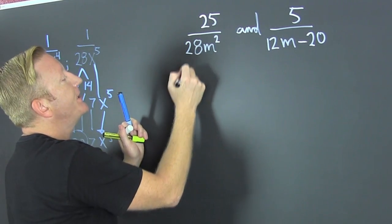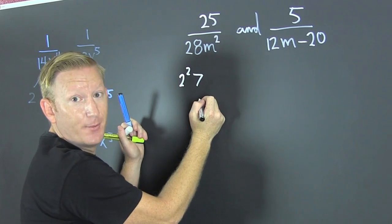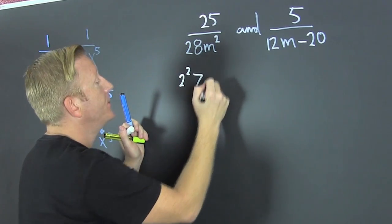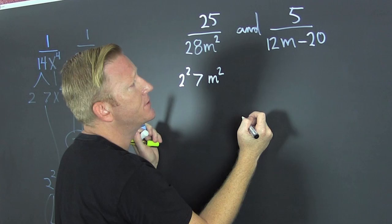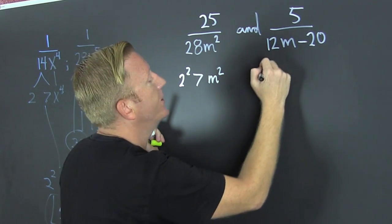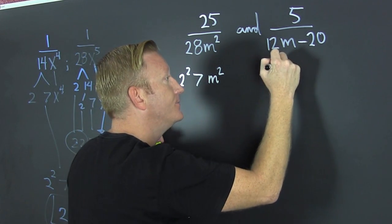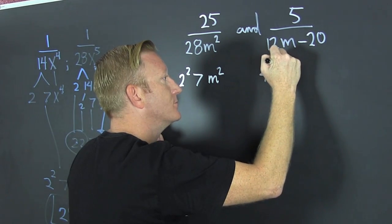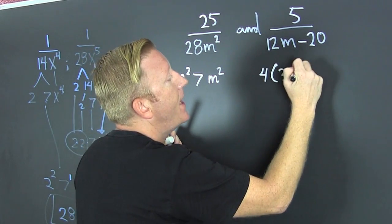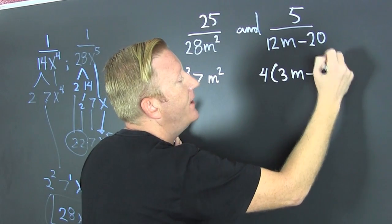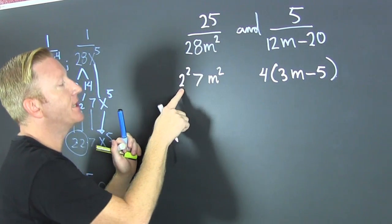That's a two squared and seven — we got that from the last example — and then M squared. This one I can factor out a four, so I take out a four, and then that's a three M minus five.